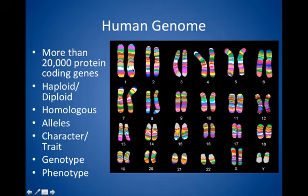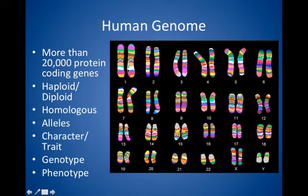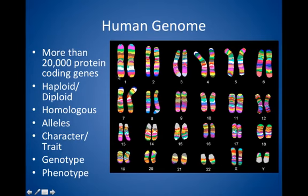Looking at the white region: on one chromosome this gene could code for blue eyes, while on the other it codes for eye color but may code for brown eyes. It's the interaction of these two alleles that leads to something called phenotype — the physical characteristic or trait of an organism. Phenotype is a result of genotype, which is the genetic makeup of the organism. So these genes are expressed in ways where an organism shows physical traits.